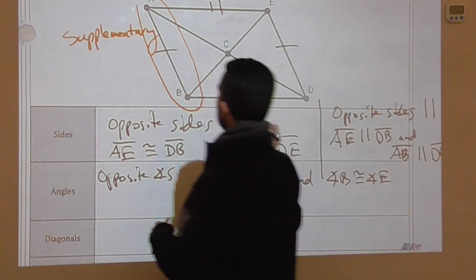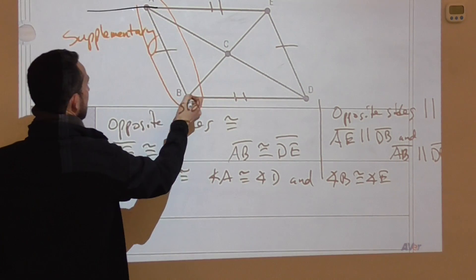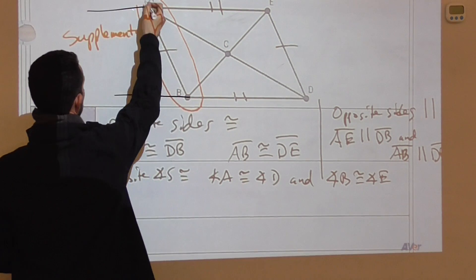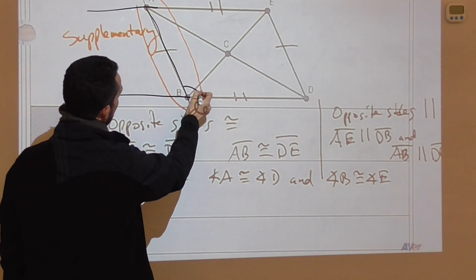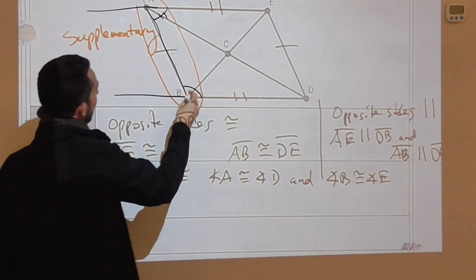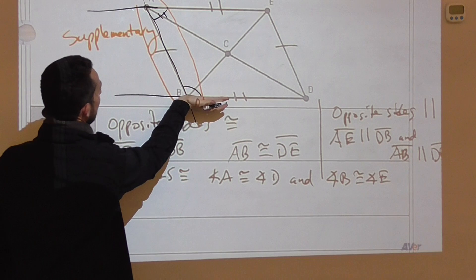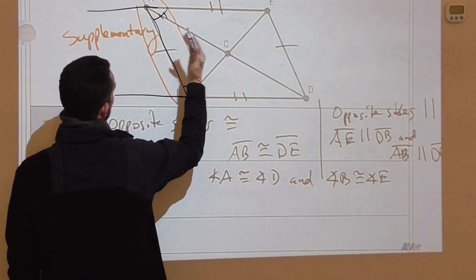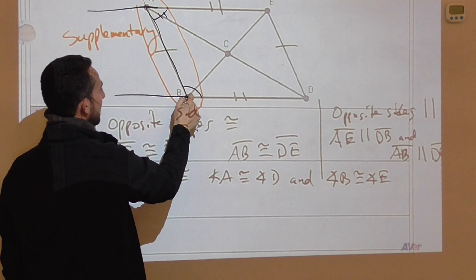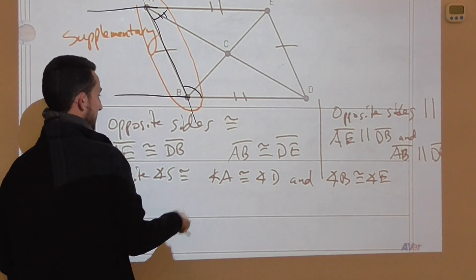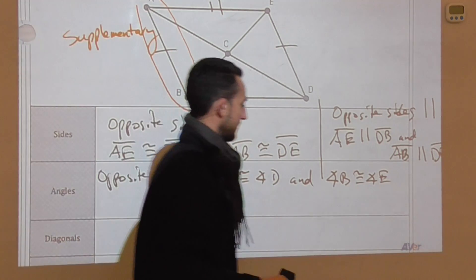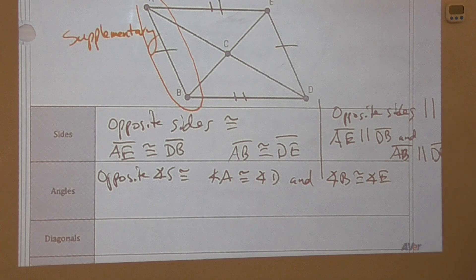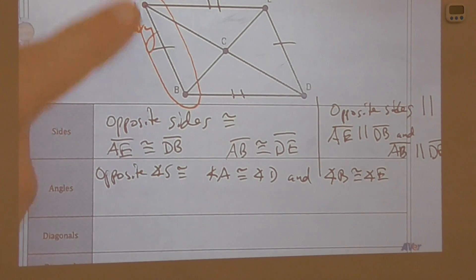Angle A and angle B are supplementary because they are same-side interior angles. If I extend the lines, we have parallel lines with a transversal, and angles between the two parallel lines on the same side of the transversal are same-side interior angles, which are supplementary. We call these adjacent angles — adjacent means next to.